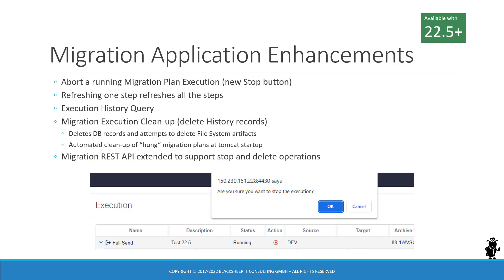As already mentioned, the migration REST API has been extended to support these operations — stopping execution plans and deleting history. So you can make REST calls if you use orchestration layers on top of the migration application.